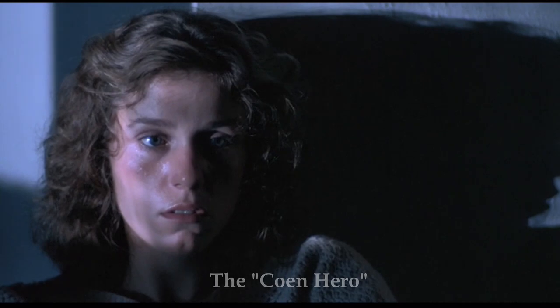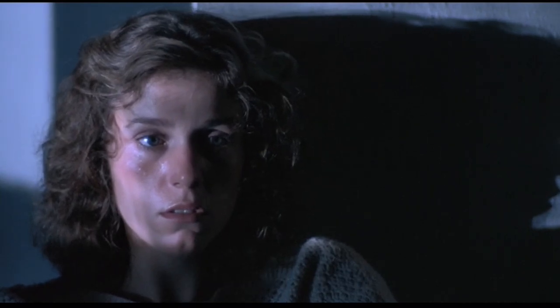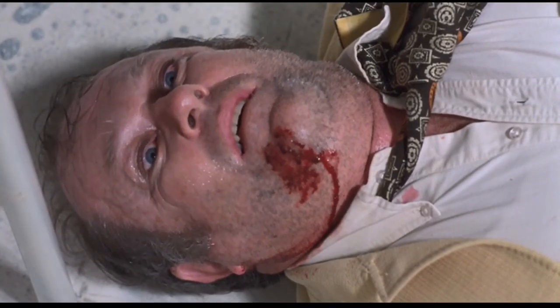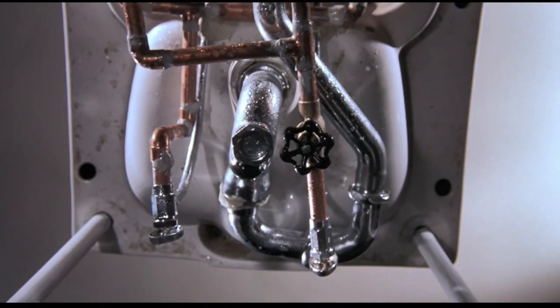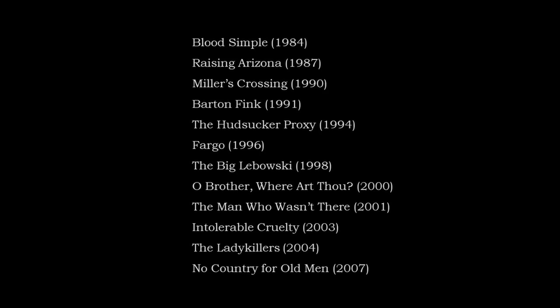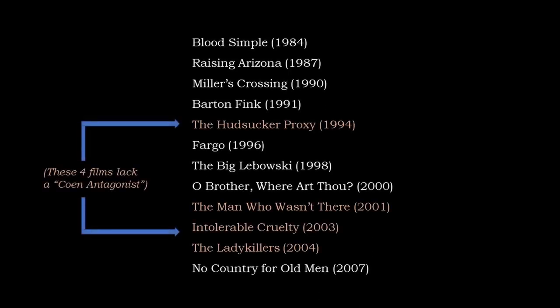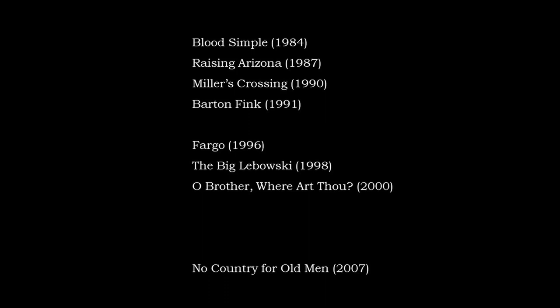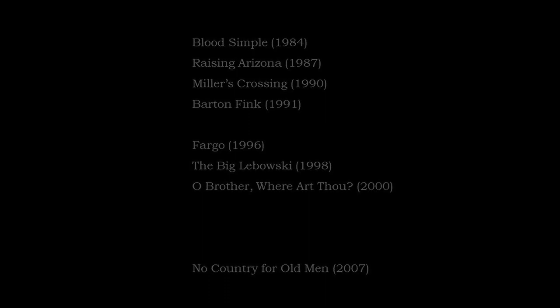These chaotic forces are then personified by the villain, and by overcoming that character, the hero manages to conquer their problems and find their place in the world. In this video, I'd like to go through the Coen brothers' movies leading up to their masterpiece, No Country, and show the evolution of the Coen villain. Because it was only through this process of trial and error that we arrive at the end product of Chigurh. Spoilers ahead for these Coen brothers movies, and I'm going to assume that you've already seen No Country for Old Men.